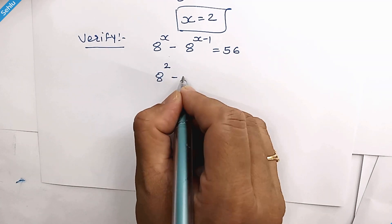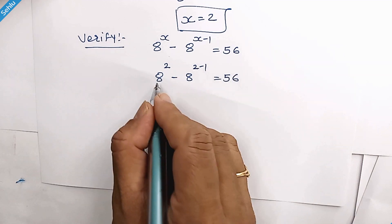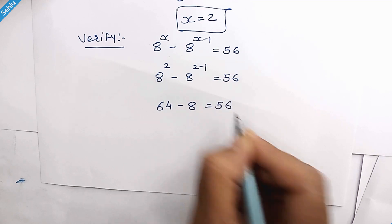8 square minus 8 to the power 2 minus 1 is equal to 56. 8 square is 64 minus 8 is equal to 56.